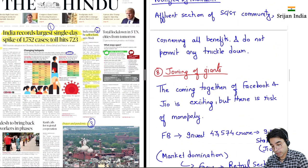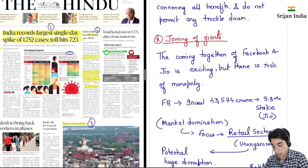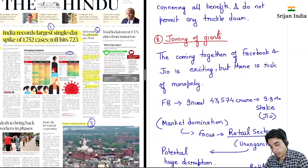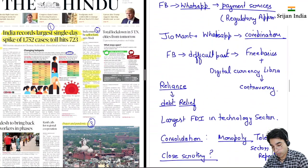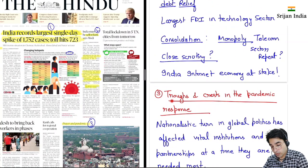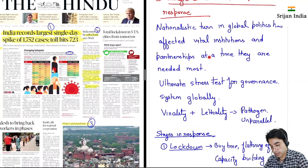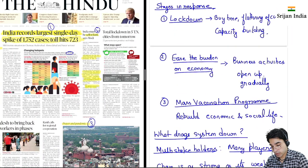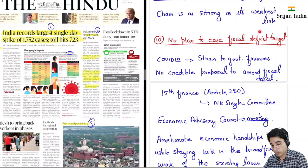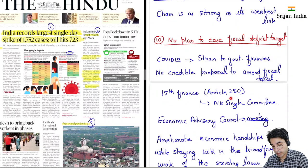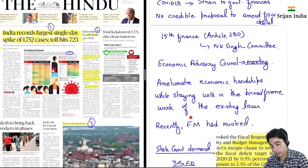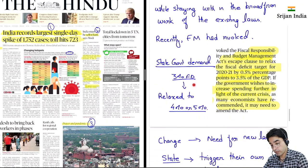Then joining of giants — ismein hum baat karenge Facebook aur Reliance Jio ke baare mein, in mein abhi jo deal hua hai, retail market mein domination. Then ninth is trough and crest in the pandemic response — yeh nationalistic turn aata hai, stages in response kya ho sakti hai. Then no plan to ease fiscal deficit target — ismein hum Article 280, 15th Finance Commission, N.K. Singh sahab ka. Inhone abhi kya bula deficit financing ke liye — we'll get to know.